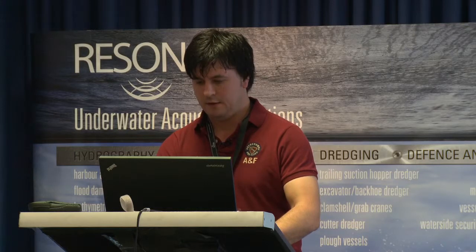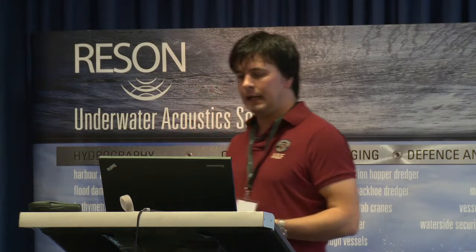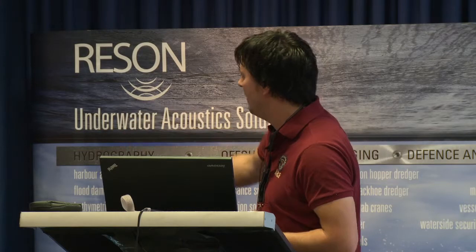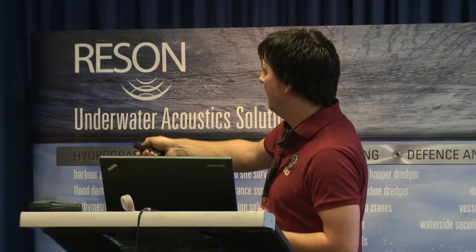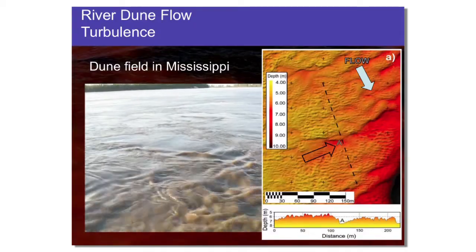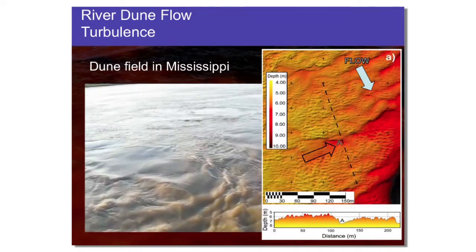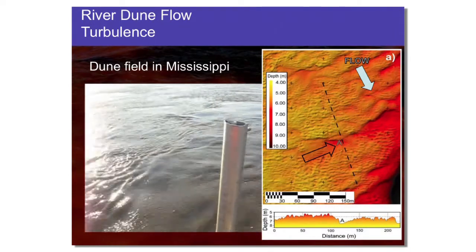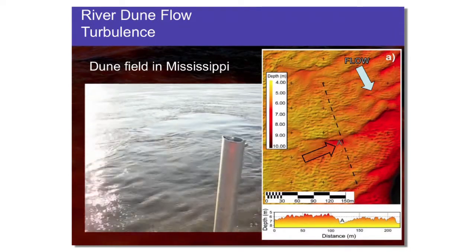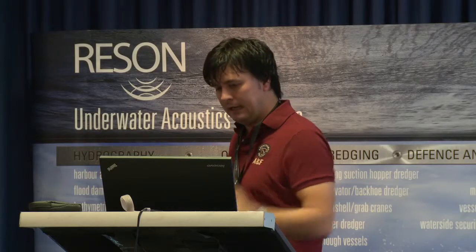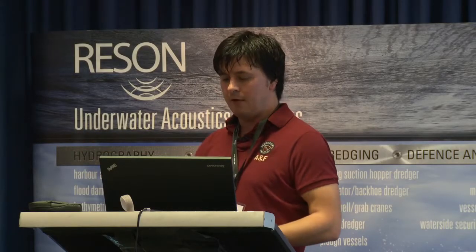Looking in the lee side of this large structure — flow is moving down the page — our swath window is covering this area. What we've done is rotate the sonar through 90 degrees from a cross-track to a long-track configuration, to look at the evolution of the flow moving across this in the downstream direction.